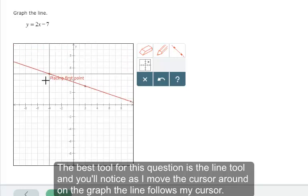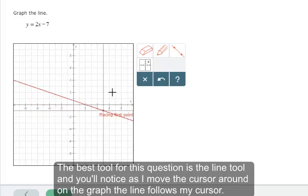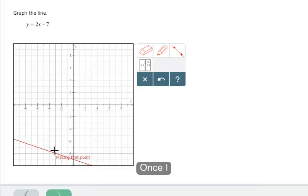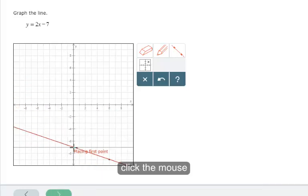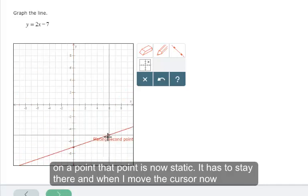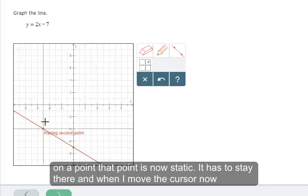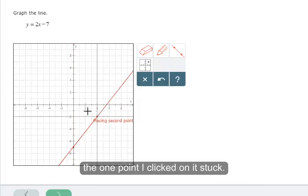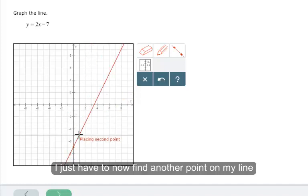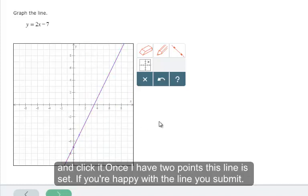And you'll notice as I move the cursor around on the graph, the line follows my cursor. Once I click the mouse on a point, that point is now static. It has to stay there. And when I move the cursor now, the one point I clicked on is stuck. I just have to now find another point on my line and click it. Once I have two points, this line is set.